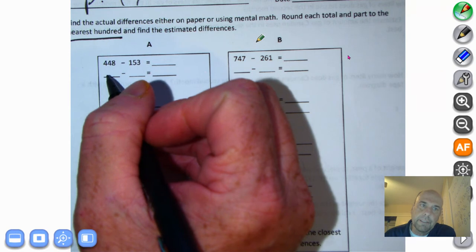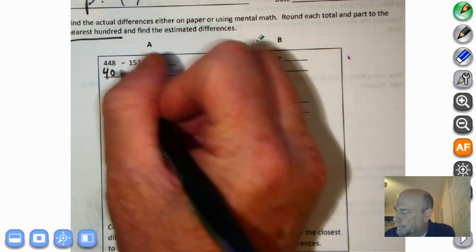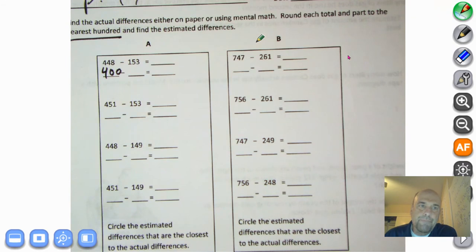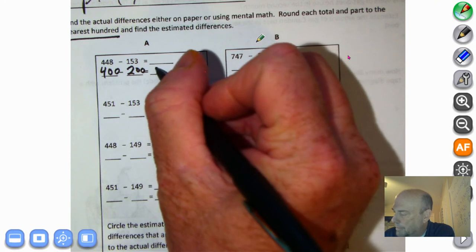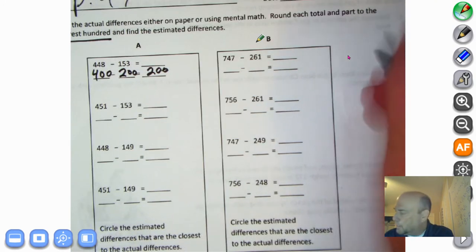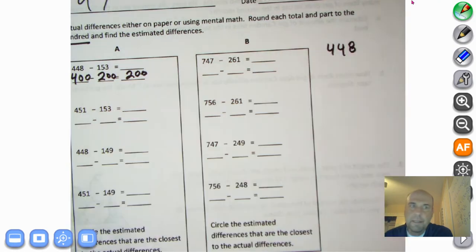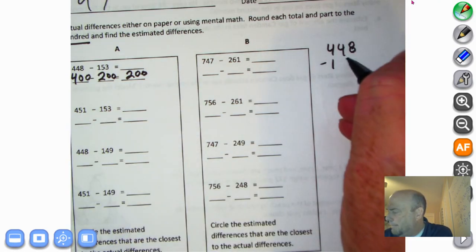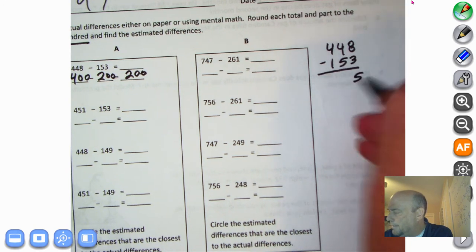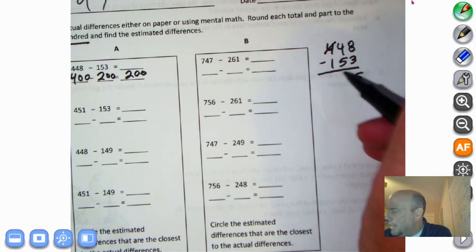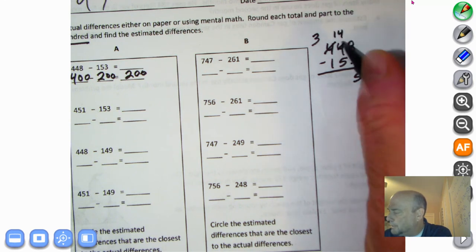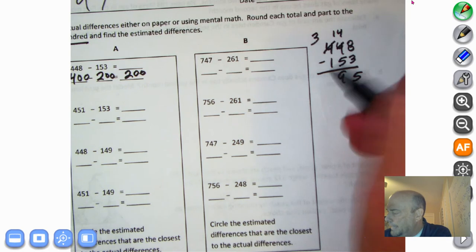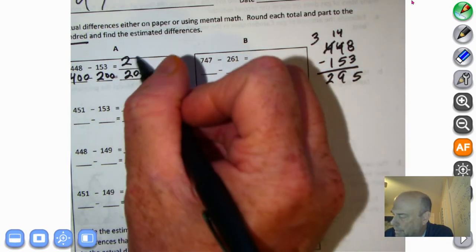448, round it to the nearest hundred, is 400, because that's less than the halfway point of 450. 153 is greater than the halfway point of 150, so we're going to round up to 200. 400 minus 200, of course, is 200. Let's take a look at the actual 448 minus 153. 8 minus 3 is 5, and follow along with me. I can't take 5 tens away from 4 tens, so I'm going to decompose 100. 10 tens plus 4 tens is 14 tens. 14 tens minus 5 tens is 9 tens. And 3 hundreds minus 100 is 2. Look, our estimate was not very close to the actual.